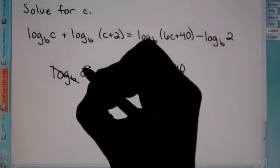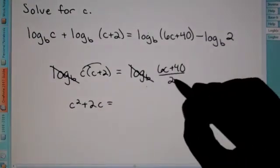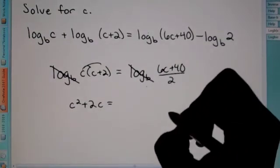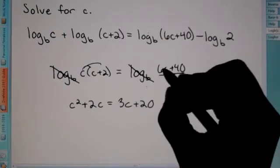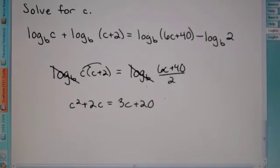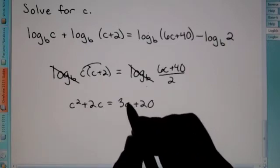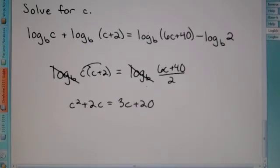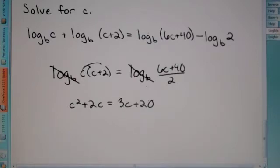So, here if we were to simplify, we would want to distribute. So, we get c squared plus 2c. Over here, you can actually reduce both of these numbers by 2. So, we get 3c plus 20. I just divided both of these by 2. And now, we have c squared, c to the first, c to the first. So, hopefully, you guys are knowing what to do from here.